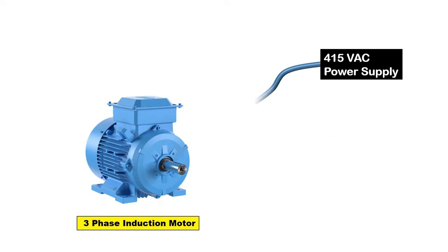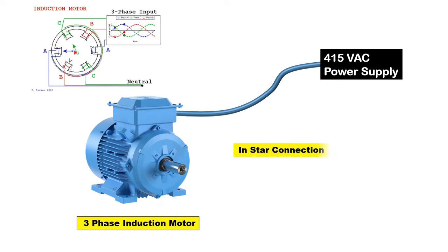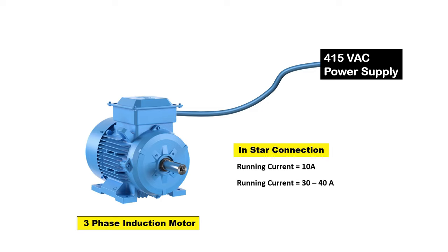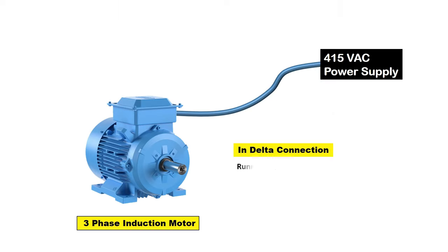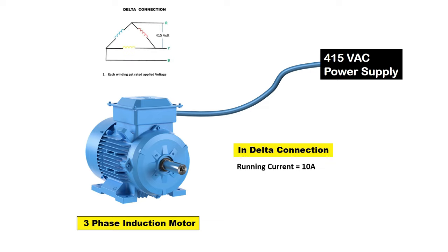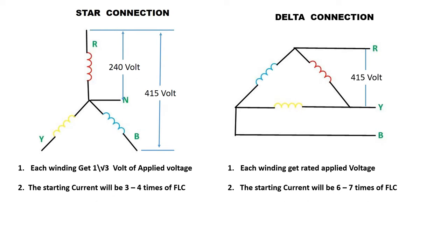Suppose you have a motor and the running current of that motor is around 10 ampere. But when you start this motor, at the starting time current can be multiples. On running, 10 ampere current flows, but 3 to 4 times of this current will flow at starting time in star connection. If you connected motor winding in delta, then the starting current of your motor will be 6 to 7 times of FLC. So if running current is 10 ampere, when you start this motor in delta connection, then 60 to 70 ampere current will flow at starting time.